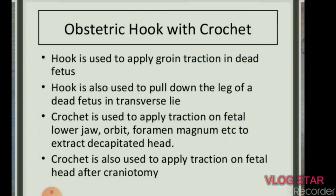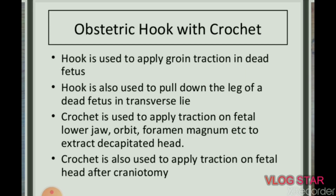Next instrument: obstetric hook with crochets. The hook is used to apply groin traction in a dead fetus and to pull down the leg of a dead fetus in transverse lie. The crochet is used to apply traction on the fetal lower jaw, orbit, or foramen magnum to extract a decapitated head. It is also used to apply traction on the fetal head after craniotomy.